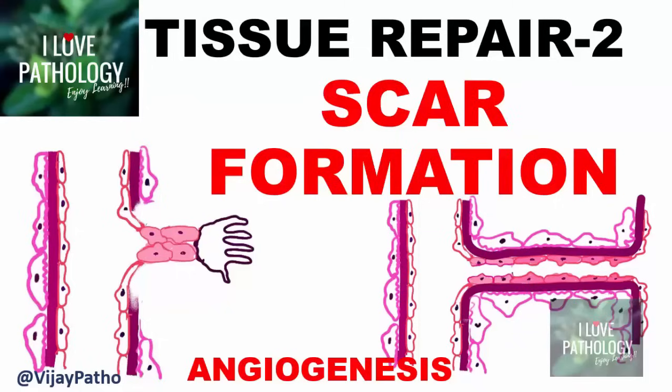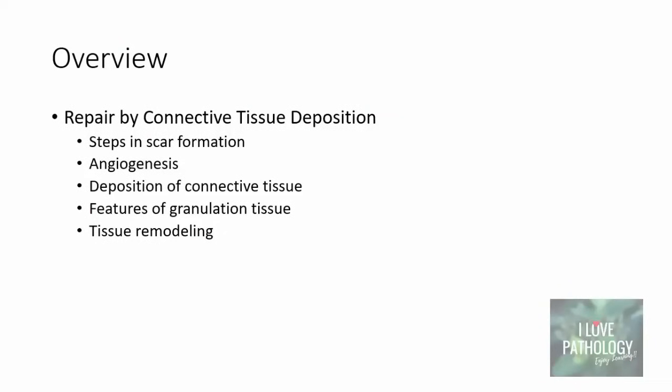Hello everyone, welcome to this short tutorial from Pathology Made Simple at ILO Pathology. This is part two of the tissue repair series, covering scar formation — that is, deposition of connective tissue. In the next 20 minutes we will discuss the process of repair by connective tissue deposition, the steps involved in scar formation, angiogenesis in detail, deposition of connective tissue, features of granulation tissue, and tissue remodeling.